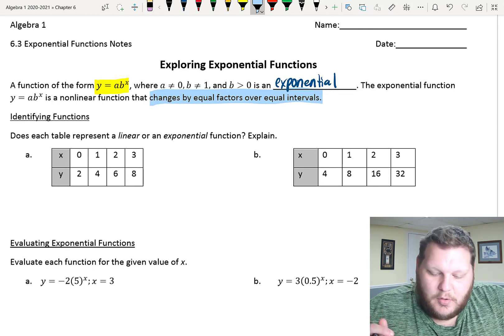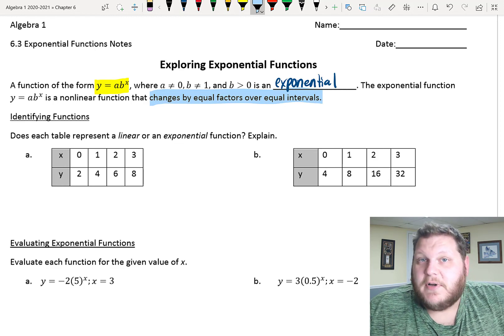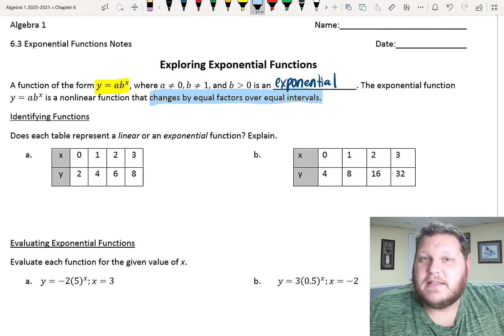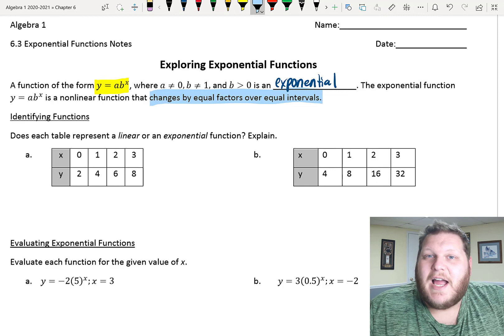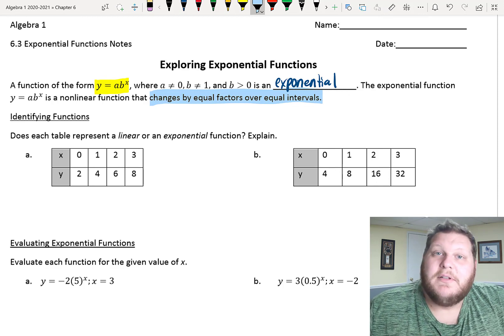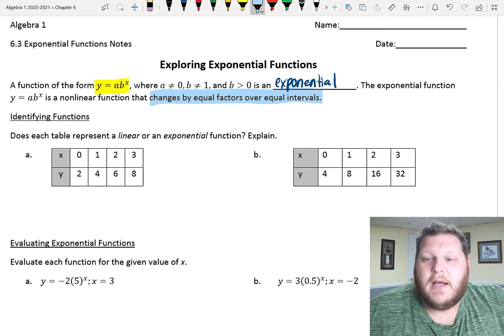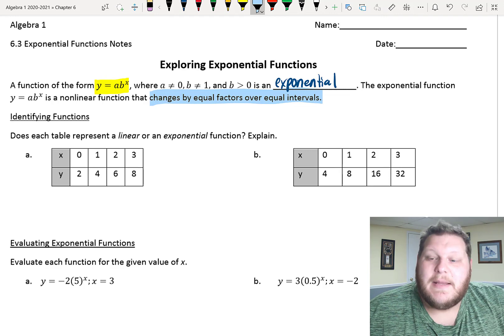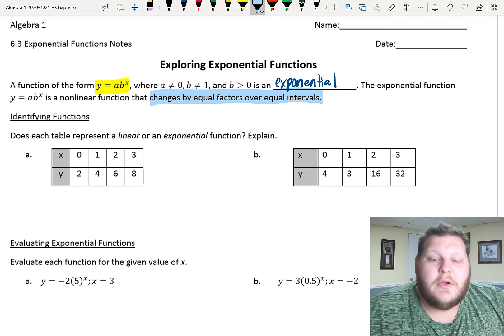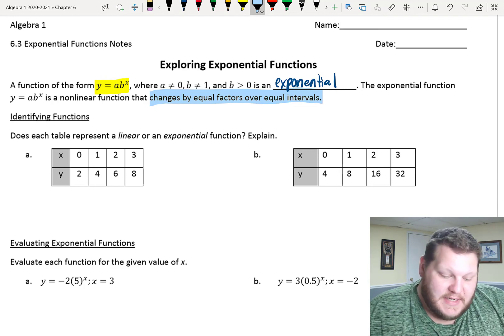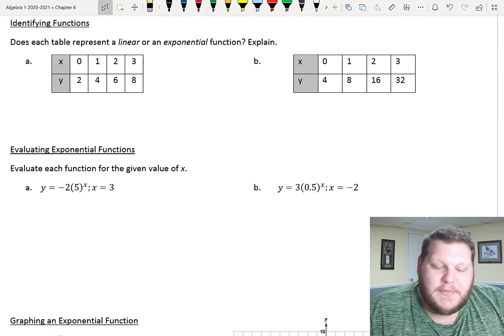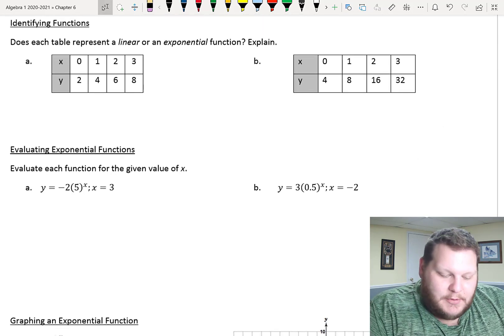In an exponential function, when we have those equal spacings of our x values, we're looking for a common factor, meaning a common multiplier between the different points of my table. So, what we're going to be doing for this first section is just identifying when something is linear or when something is exponential from a table.